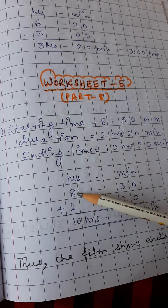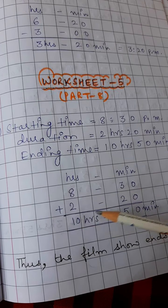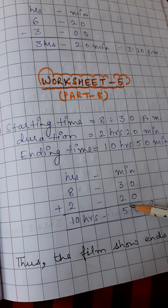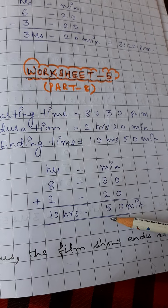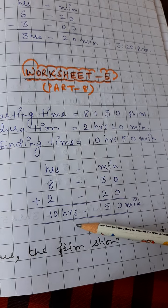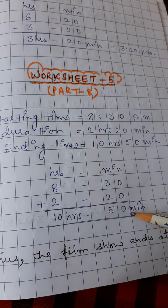Write 8 in the hours column and 30 in the minutes column. In the similar way, write 2 below 8, and 20 below 30. Now add: 0 plus 0 is 0, 3 plus 2 is 5, 8 plus 2 is 10. So it is 10 hours 50 minutes.